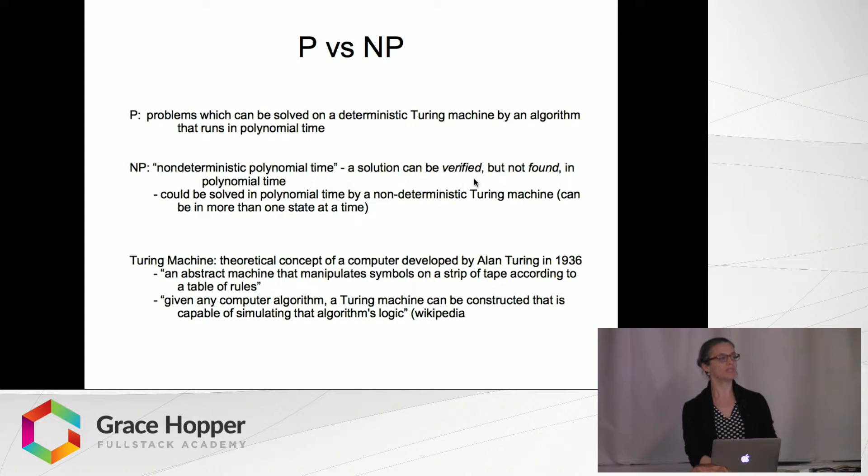So NP problems can be verified but not solved in polynomial time. They can, however, be solved in polynomial time on a non-deterministic Turing machine, which is just a concept of some kind of computer that would be able to be in different states. So performing different operations at the same time, which I don't think exists in real life. It may be quantum computing, but that's a question for someone besides me.